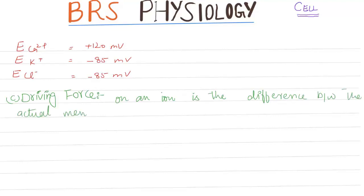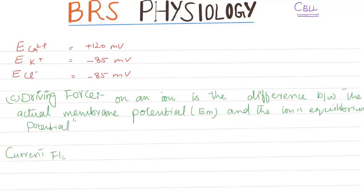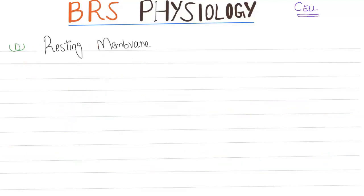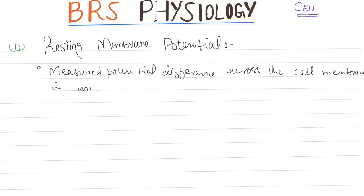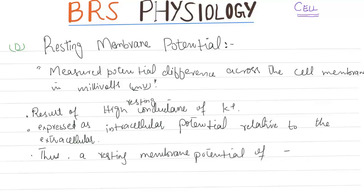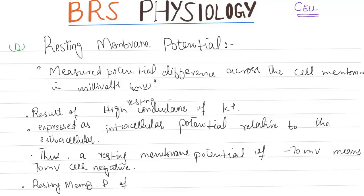Driving force on an ion is the difference between the actual membrane potential and the ion's equilibrium potential. Current flow occurs if there is a driving force on the ion and the membrane is permeable to that ion. Resting membrane potential is the measured potential difference across the cell membrane in millivolts, resulting from the high resting conductance of potassium, expressed as intracellular potential relative to extracellular. A resting membrane potential of −70 mV means the cell is 70 mV negative. The resting membrane potential of nerve is −70 mV, close to the potassium equilibrium potential of −85 mV but far from the sodium equilibrium potential.